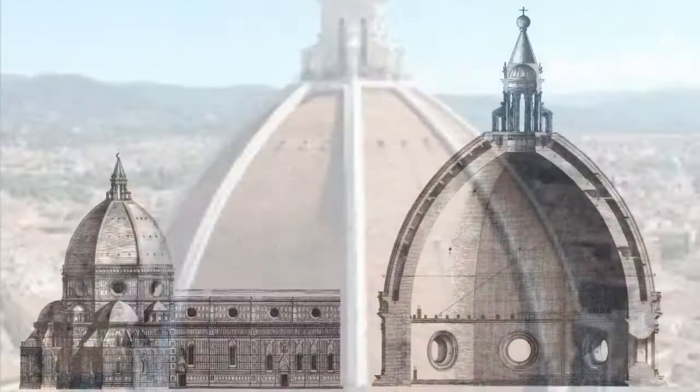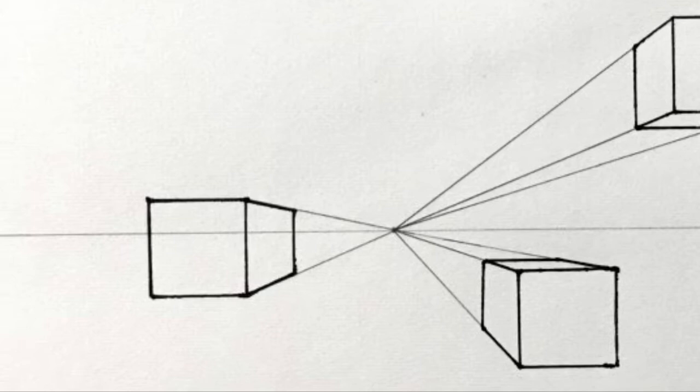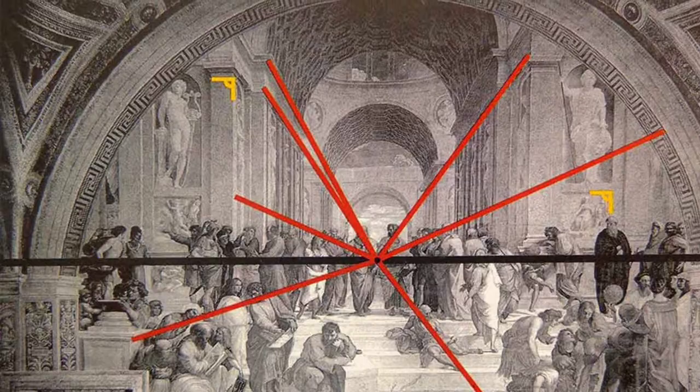Brunelleschi is most known in history for his design of the Cathedral of Santa Maria del Fiore in Florence. Before the design of the dome, Brunelleschi had rediscovered one-point linear perspective around 1410 and 1415. His understanding of perspective and depth allowed paintings and drawings to become more realistic.